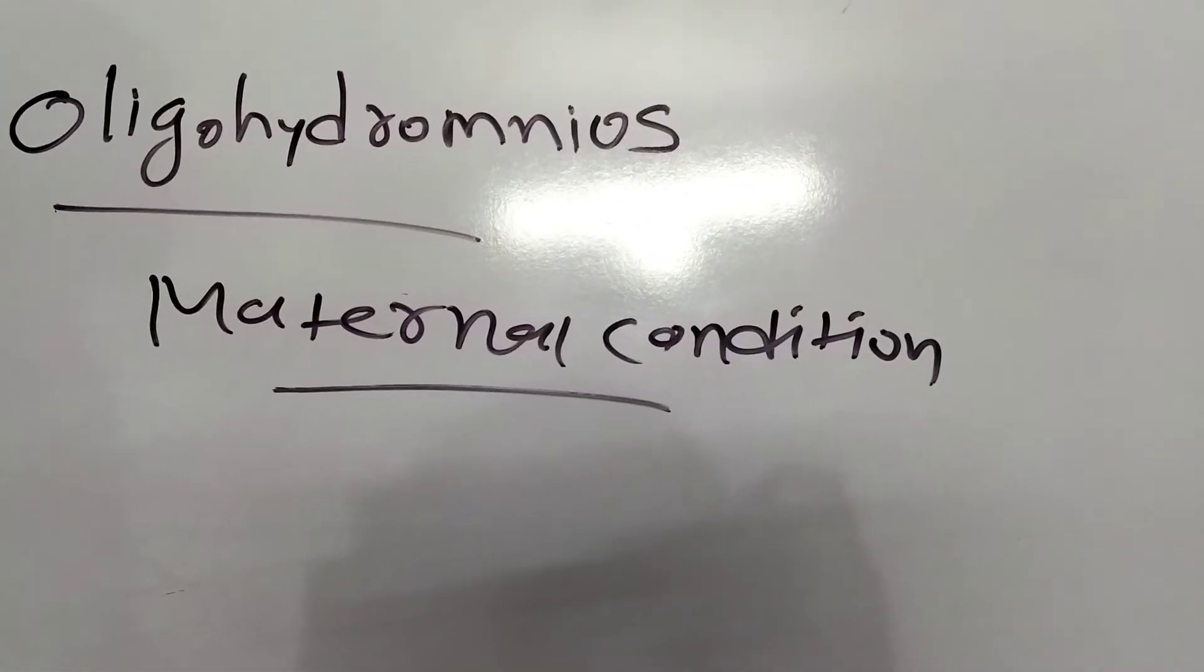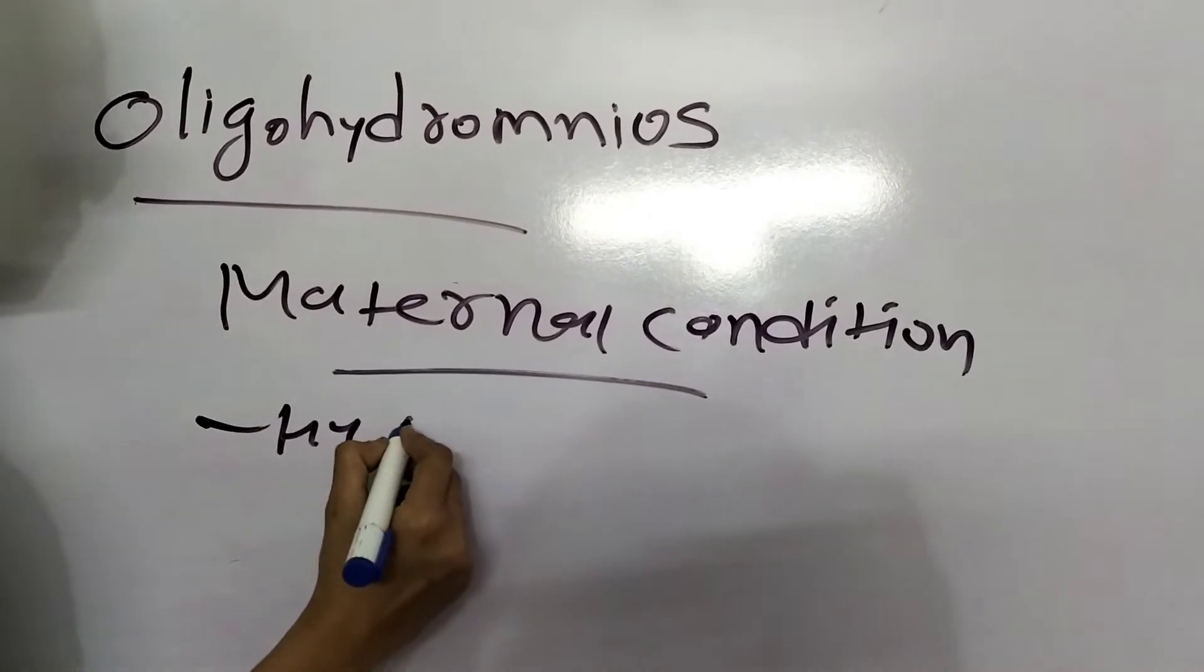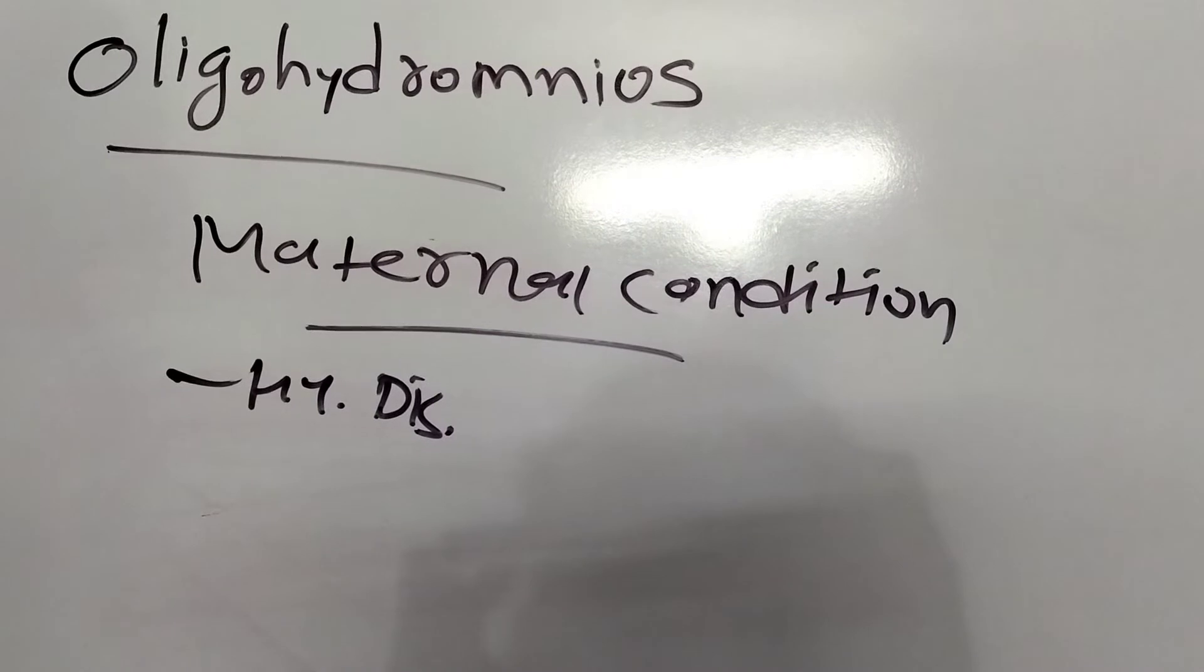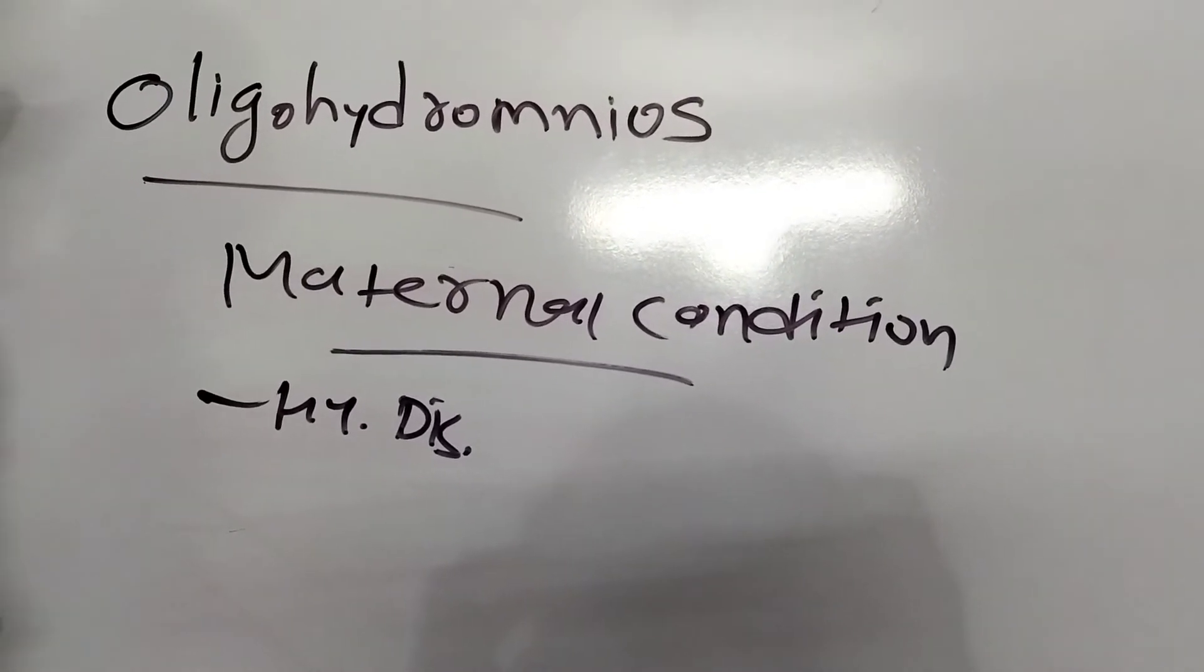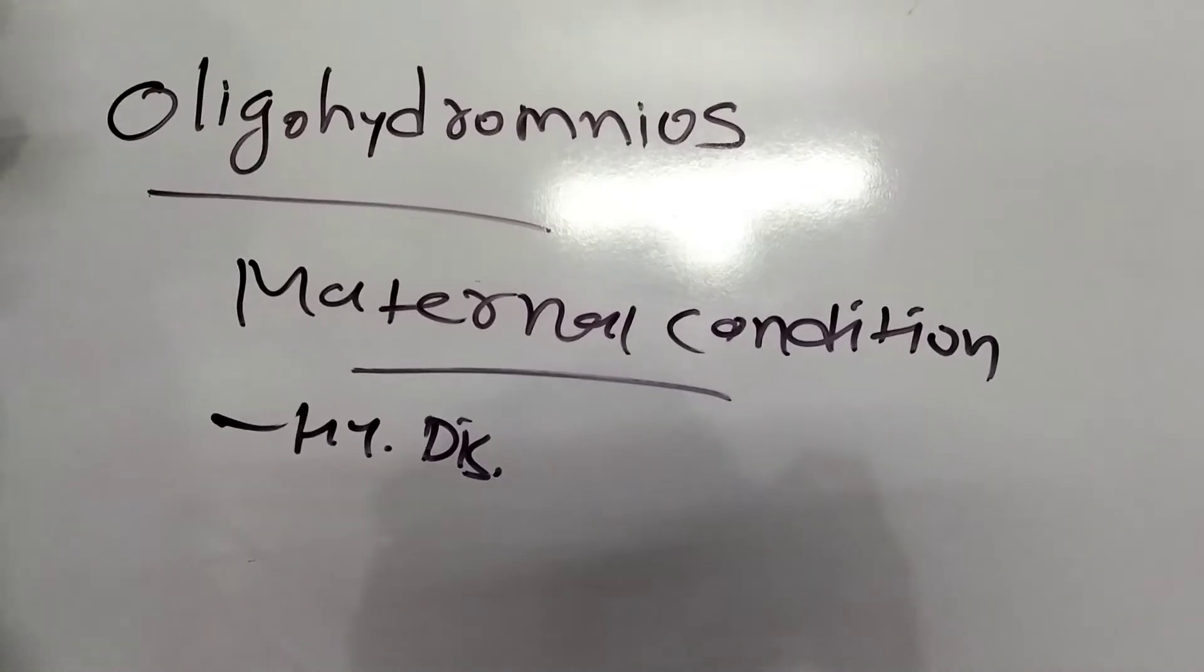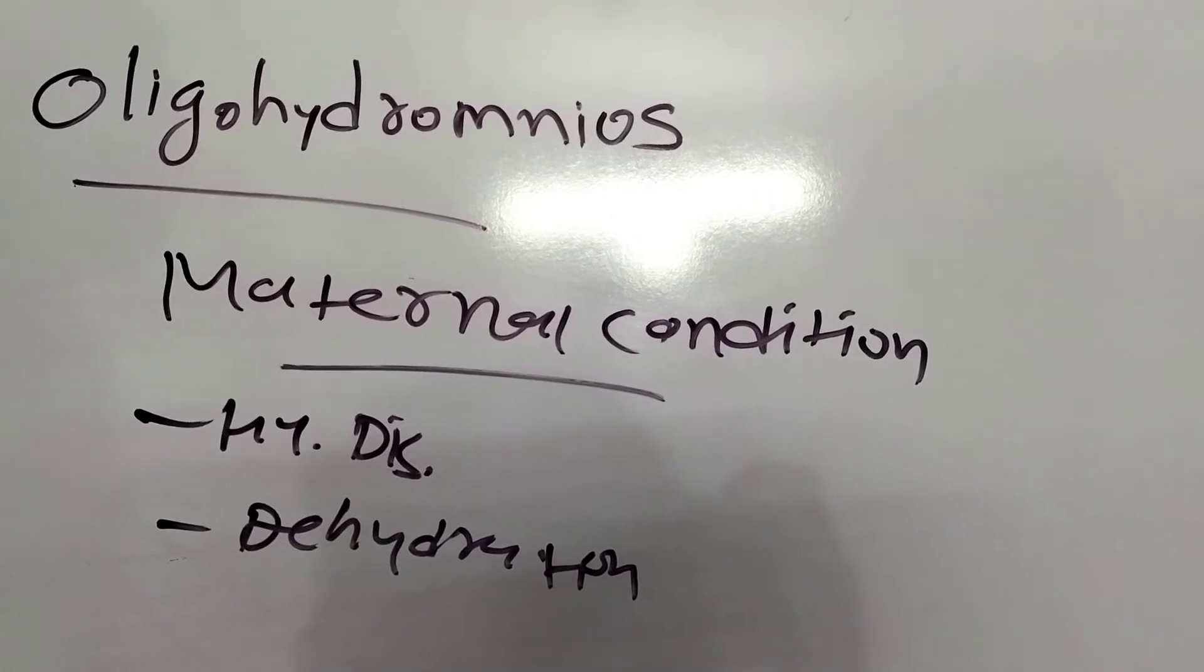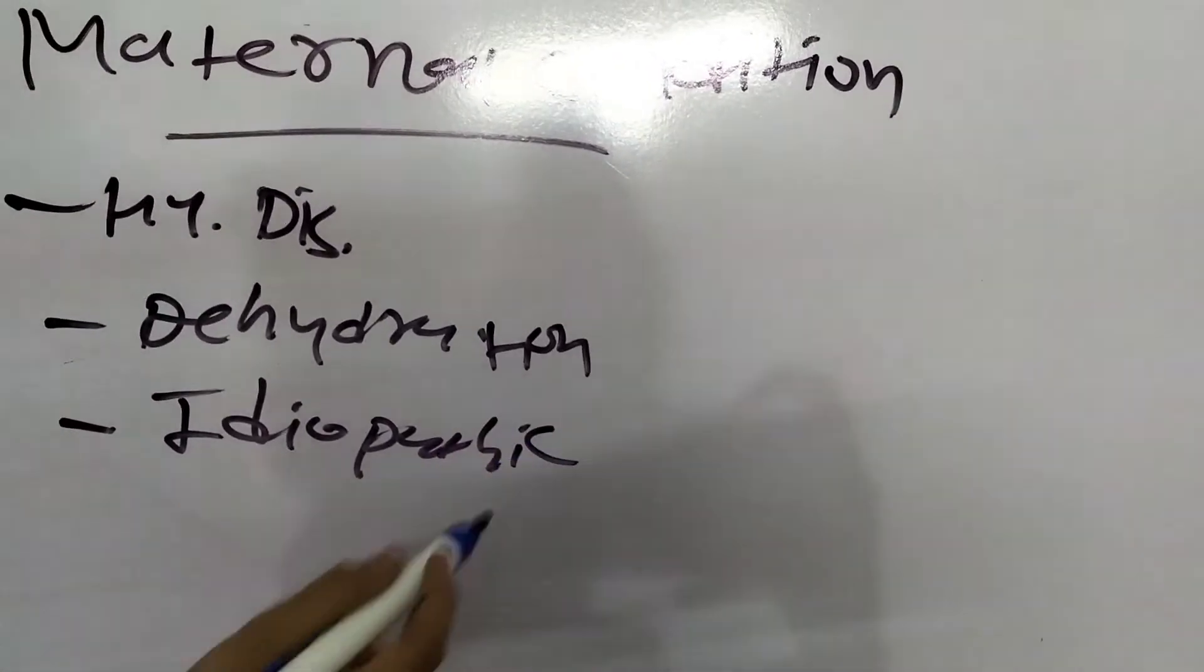Some maternal conditions are also responsible for oligohydramnios, like hypertensive disorders. If the mother has increased blood pressure, that also leads to oligohydramnios. Utero-placental insufficiency means the placenta and uterus are not functioning properly. Dehydration, if the mother takes less amount of fluid, can also cause oligohydramnios. Sometimes there are unknown causes, meaning idiopathic causes.